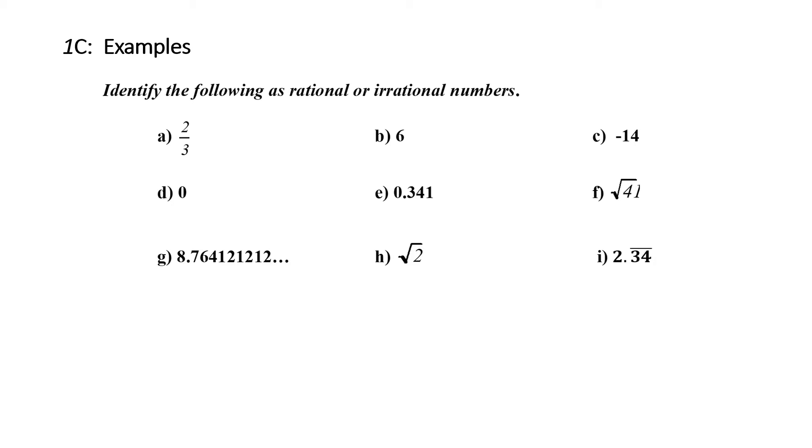I'd like you to try these examples, label them as rational or irrational, and I will do them in a minute. So stop the recording now. All right. Let's start with 2 over 3. Rational or irrational? Well, that's already a fraction, which is the definition of a rational number. So it's got to be rational.